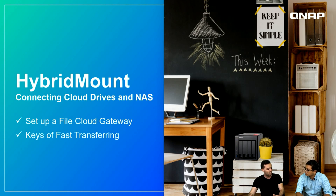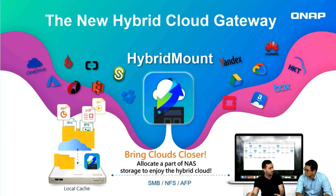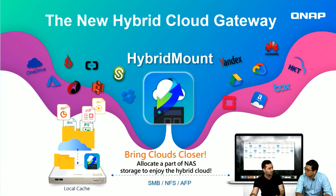The hybrid cloud gateway sits in the middle between the NAS and the computer. We can bring clouds closer — using Samba, NFS, or AFP connections, we can mount cloud storage as a local cache in the NAS. For example, cloud service providers like Dropbox or Google Drive can be set up with hybrid mount space, providing a cache that you can access really fast from your personal computer.